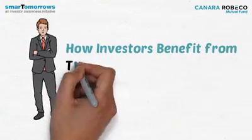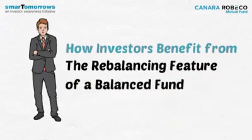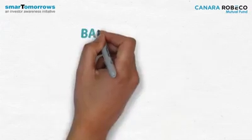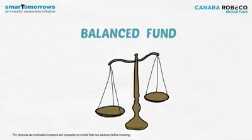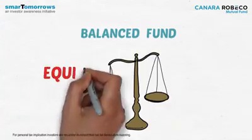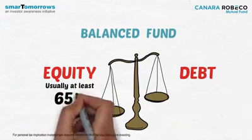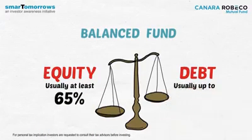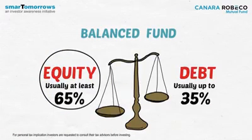How investors benefit from the rebalancing feature of a balanced fund. A balanced fund is a portfolio which has exposure to the two primary asset classes: equity and debt. The equity allocation is at least 65% so that the investor gets the benefit of equity tax treatment, and the capital gains from funds held for over 12 months is tax-free.